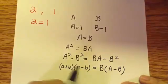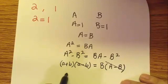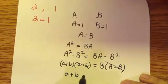So now I can just cancel A minus B from both sides, and I'll be left with A plus B equals B.